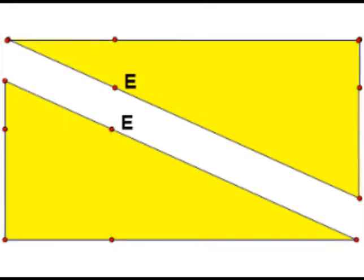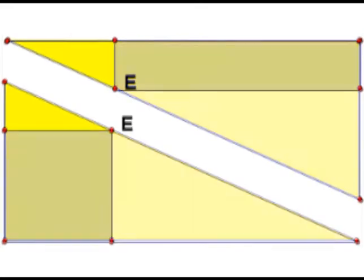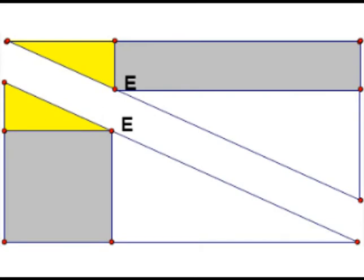Since the large right triangles are congruent, they have the same area, and the small right triangle in one is congruent to the small right triangle in the other.